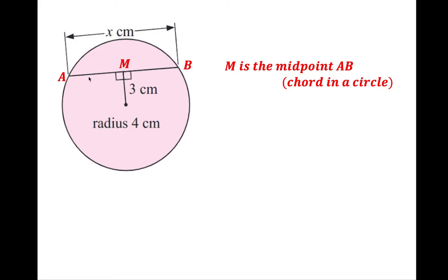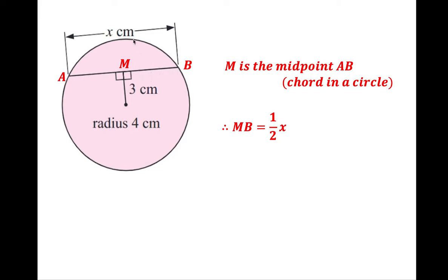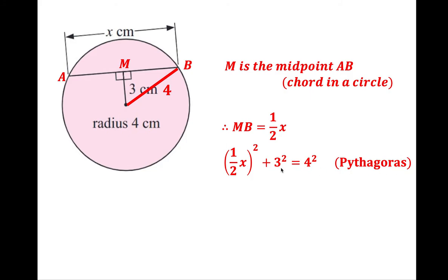M is the midpoint of AB — it's the midpoint because this has been bisected. We know that because of the chord in a circle theorem. Therefore MB, this segment, is half X. If the whole chord is X, then this must be half X, because AM and MB are equal. I'm drawing a radius from here to here — having triangles helps. That radius has a length of four. Using the Pythagorean theorem: (½X)² + 3² = 4². The reason we can write this is the Pythagorean theorem.